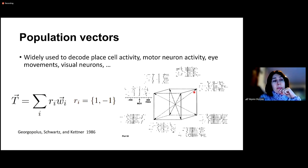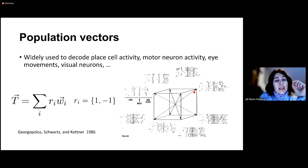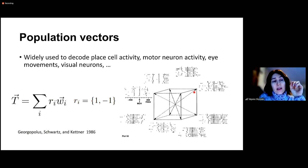The population vector construction is structurally similar to what we derived on the board, but the difference with the Georgopoulos equation is that they normalize the vector to have unit length. That caused a series of papers we will be discussing, examining how this population readout differs from the information-preserving sufficient statistic we derived.